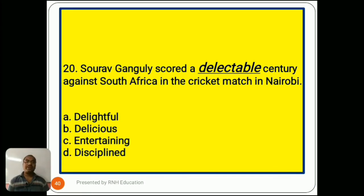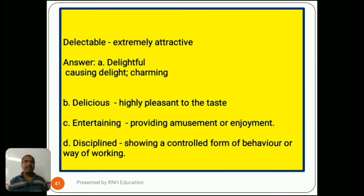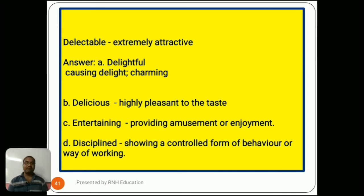Question number 20: 'Sourav Ganguly scored a delectable century against South Africa in the cricket match at Nairobi.' Options are A) delightful, B) delicious, C) entertaining, D) disciplined. The word delectable means extremely attractive. So the answer is A) delightful, meaning causing delight, charming. Option B, delicious, means highly pleasant to the taste. Option C, entertaining, means providing amusement or enjoyment. Option D, disciplined, means showing a controlled form of behavior or way of working.